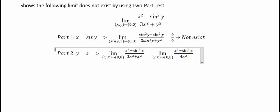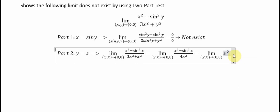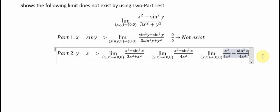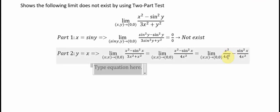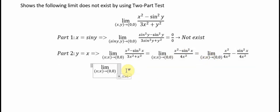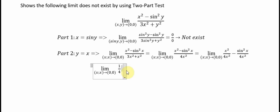We can divide: x squared over 4x squared minus sin squared x over 4x squared. We know that x squared divided by 4x squared equals 1/4. And the limit of sin(x) divided by x equals 1, so sin squared x divided by x squared equals 1, giving sin squared x over 4x squared equal to 1/4. Therefore the result is 1/4 minus 1/4, which equals 0.